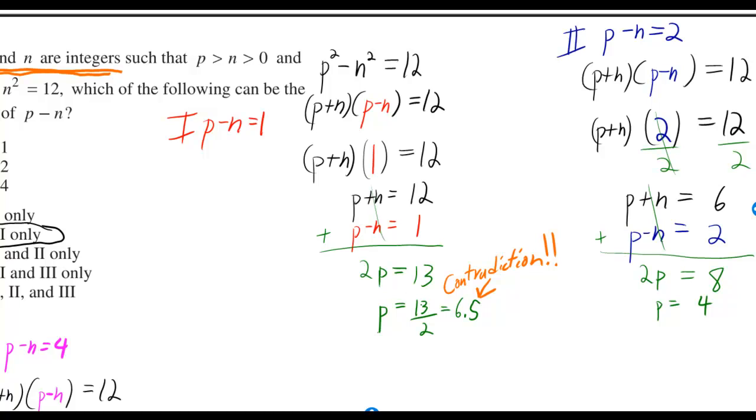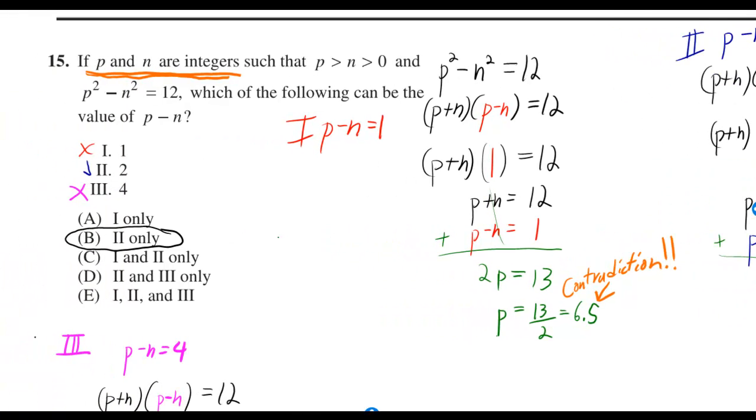And then p is equal to whatever 13 divided by 2 is. But that's 6.5, and that contradicts the fact that they told us p had to be an integer. So 1 can't be right.